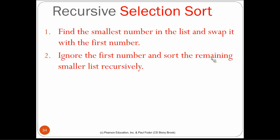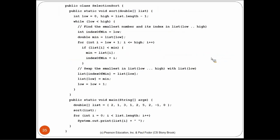We only have to find how to implement it using a helper function. The algorithm we saw earlier this semester when we talked about sorting is an iterative algorithm. We define the sort method that takes a list as a list of doubles, defining a low index assigned 0 and a high index assigned the length of the list minus 1. As long as low is less than high, we find the smallest element in the list from position low to high.